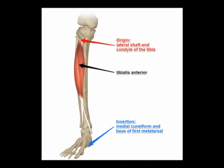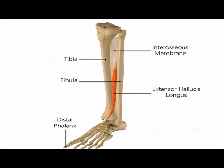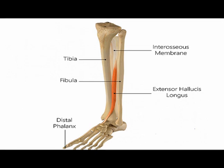The muscles of the lower leg anterior compartment include the tibialis anterior, the extensor digitorum longus, extensor hallicus longus, and fibularis tertius. The tibialis anterior muscle dorsiflexes and inverts the ankle. The extensor digitorum longus extends toes 2, 3, 4, and 5 and dorsiflexes the ankle. The concentric actions of the extensor hallicus longus are great toe extension and ankle dorsiflexion.